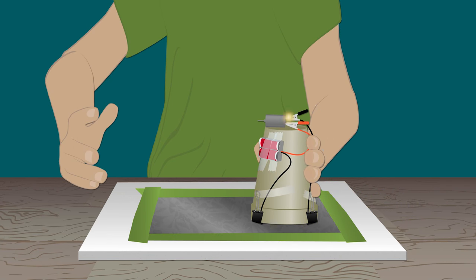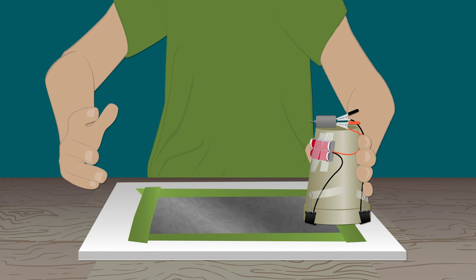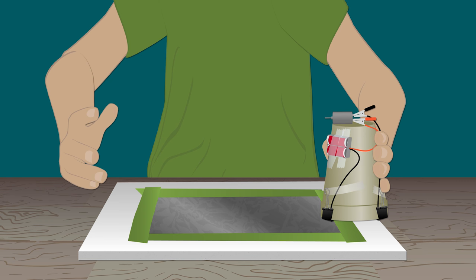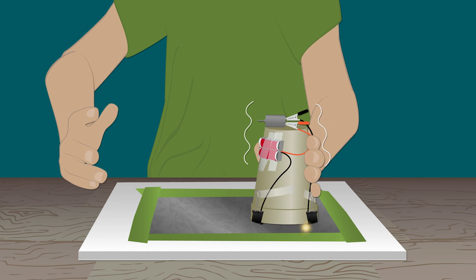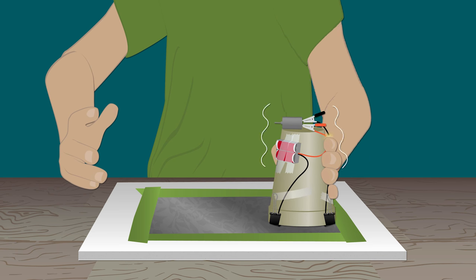Paper is an insulator, which electricity doesn't flow through. So when the paper touches the two paper clips on the robot, the circuit goes from being a closed circuit back to being an open circuit.